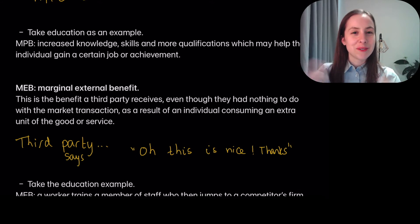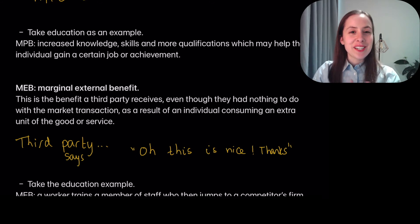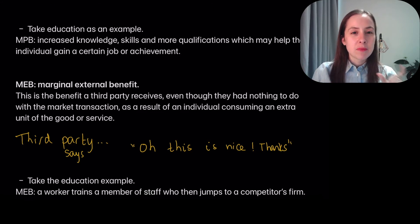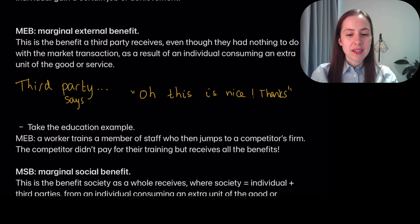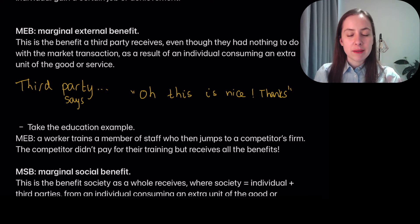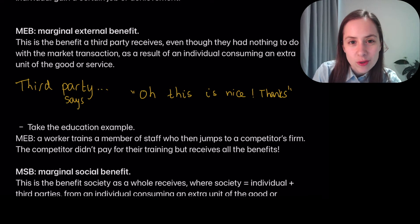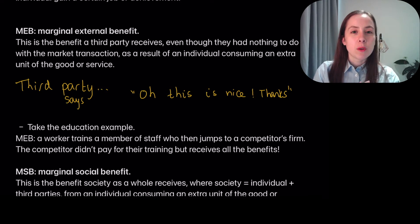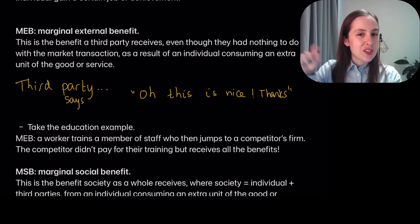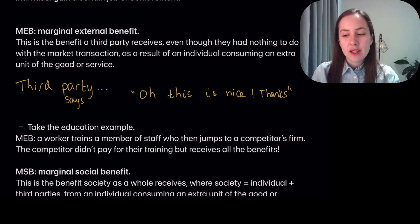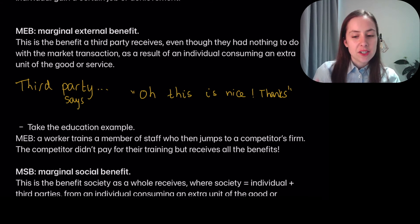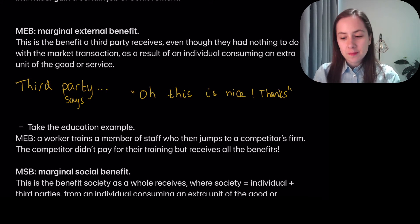Those are all benefits to yourself. But did you know that education also has impacts on third parties? This is where the next definition comes in: MEB — Marginal External Benefit. This is the benefit a third party receives as a result of an individual getting an education, even though the third party had nothing to do with it.